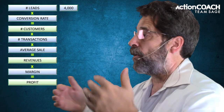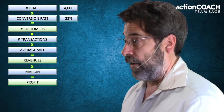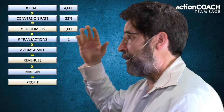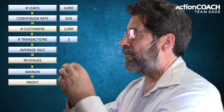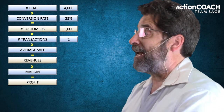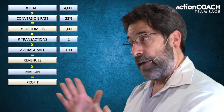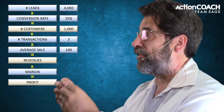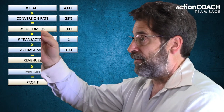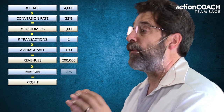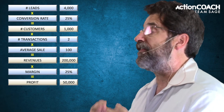If you have 4,000 leads and a 25% conversion rate, that means 25% of those 4,000 leads become customers, giving you 1,000 customers. If on average those customers buy from you twice and the average sale is $100, then 1,000 customers times two transactions times $100 gives you $200,000 in revenues. With a 25% margin, that gives you $50,000 in profit.